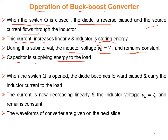The capacitor is supplying energy to the load during the first sub-interval. The second sub-interval starts when the switch Q is open and the diode becomes forward biased to carry the inductor current to the load. Now the inductor is releasing its energy and the current is decreasing linearly. The expression for the inductor voltage during this sub-interval is VL equals V0, and this voltage remains constant.